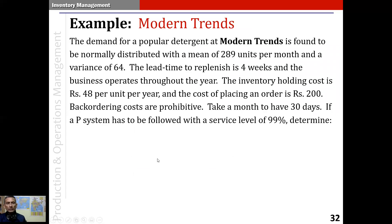To understand these calculations, let's do a simple example. This is a retail store called Modern Trends. The demand for a popular detergent at Modern Trends is found to be normally distributed with a mean of 289 units per month and a variance of 64. The lead time to replenish is 15 days, and the business operates throughout the year.